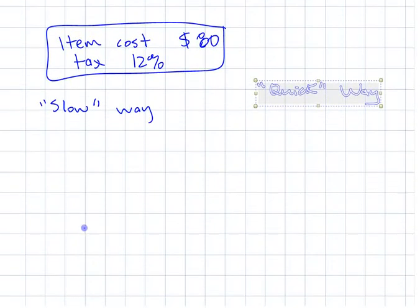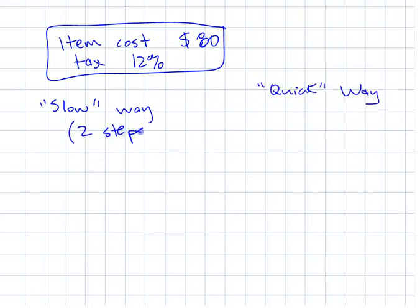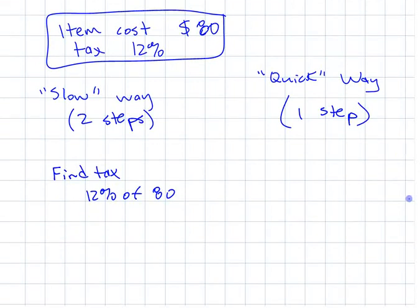The slow way is to figure out the tax and then add it on. That's two steps. The quick way is to just combine the percents beforehand and then you can do it in one step. For example, if an item cost $80 and the tax is 12% because that's what it is here in BC.